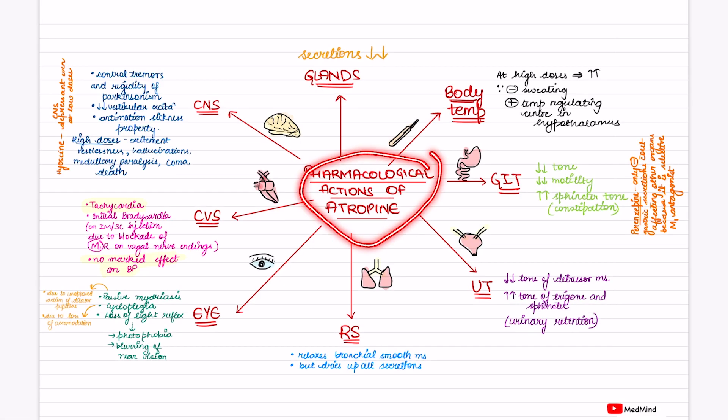Next we have pharmacological actions of atropine. What will be the effect on CNS? It controls tremors and rigidity in Parkinsonism, has vestibular excitation and anti-motion sickness properties. A major thing to note here is hyoscine is CNS depressant even at low doses, whereas atropine at high doses is CNS stimulant.